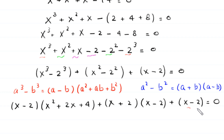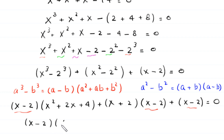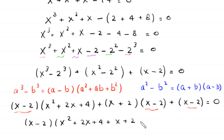Now x minus 2 is a common factor. We factor out x minus 2, and in the brackets what remains is x squared plus 2x plus 4, plus x plus 2, plus 1, all equal to 0.